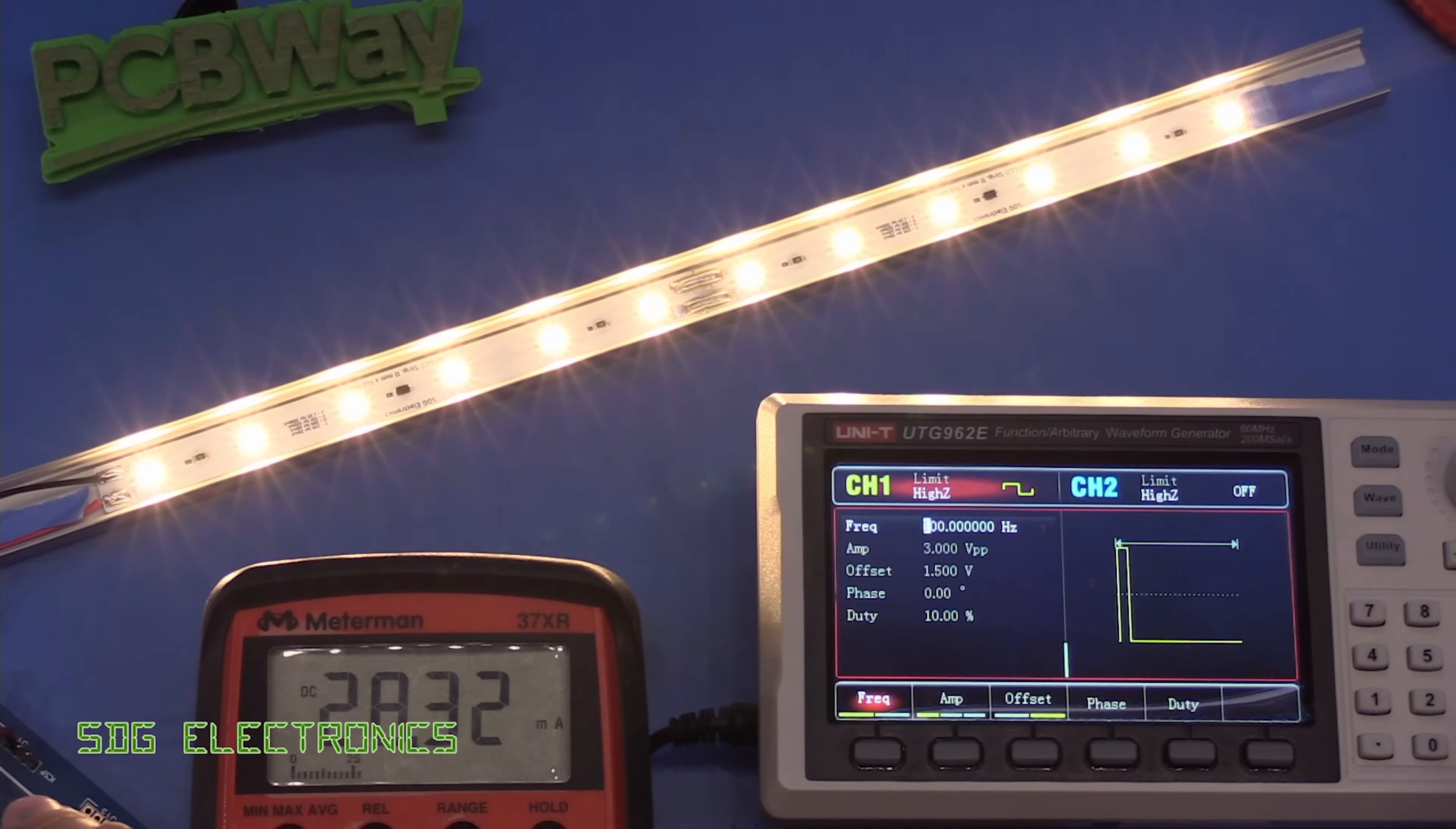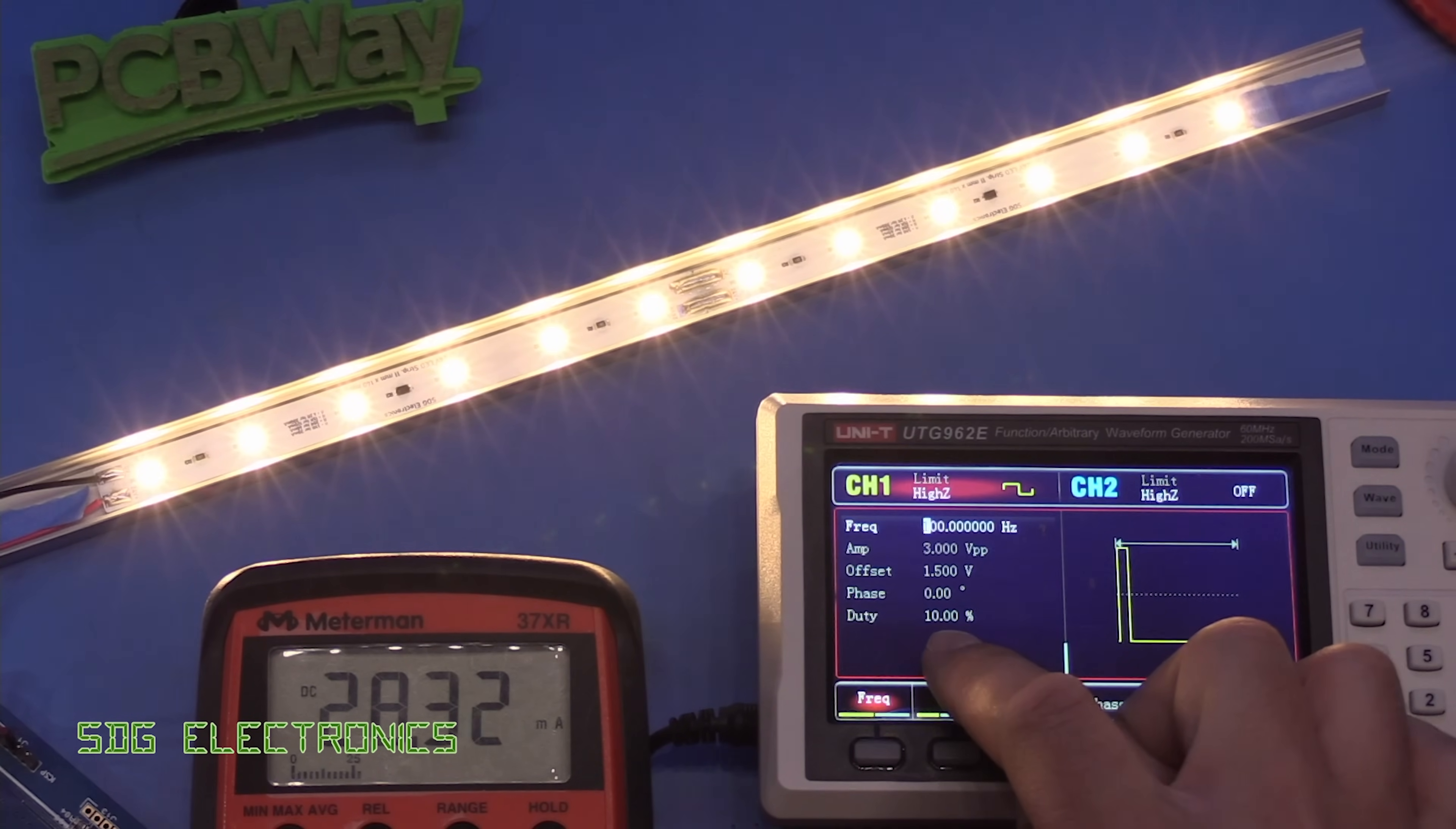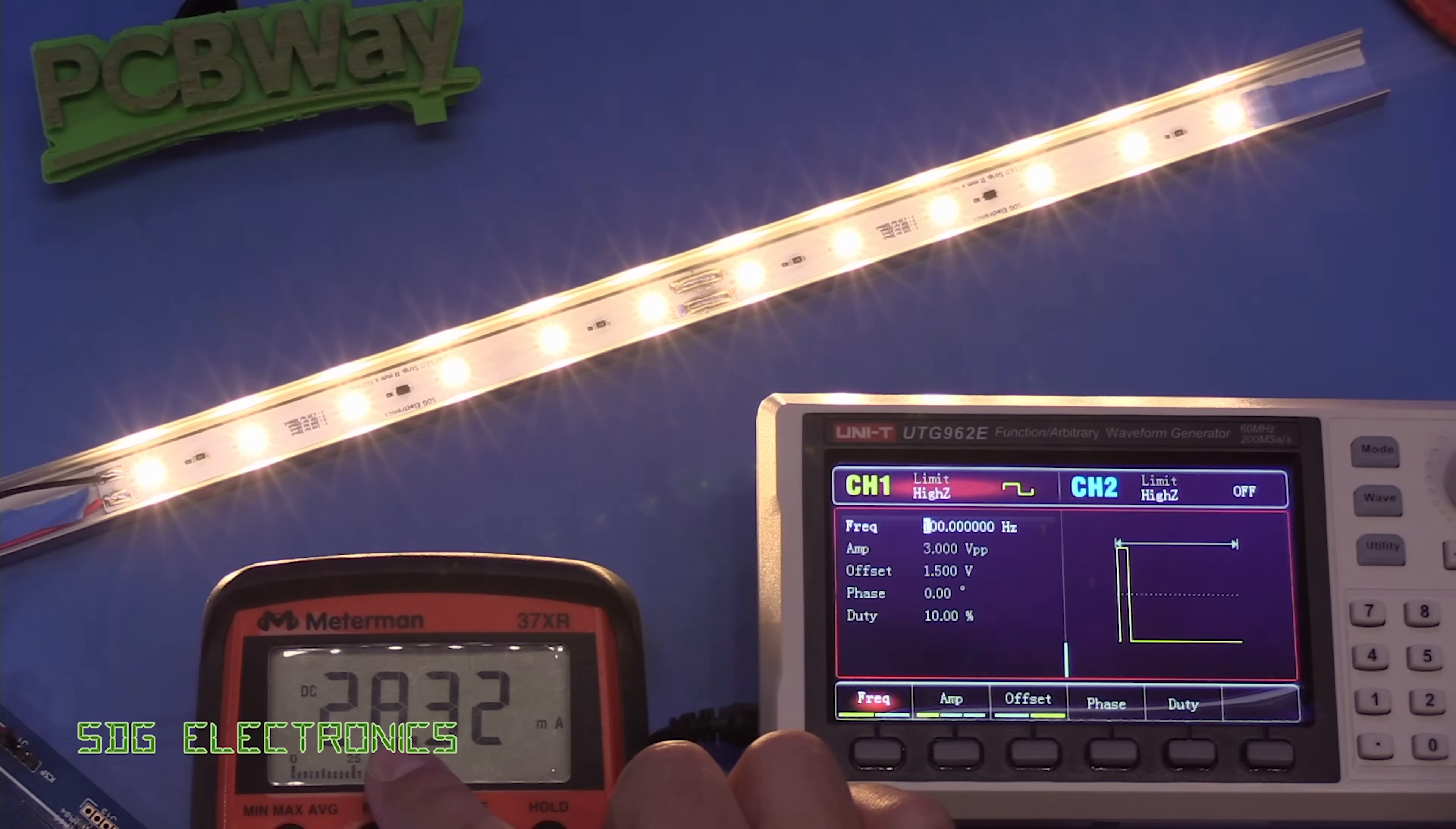Right so we've got the LED strip hooked up to one of my control boards and I've also got the waveform generator connected to it so we can control both the frequency and the duty cycle. We're at 10% duty at the moment and that's giving us about 10% of the original 300 milliamps so at 100 hertz we're definitely able to do 10% duty cycle.